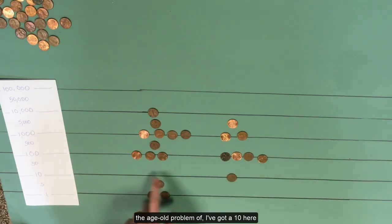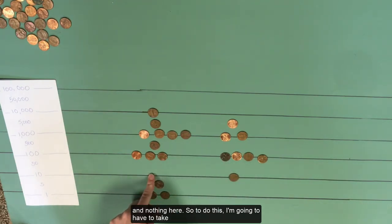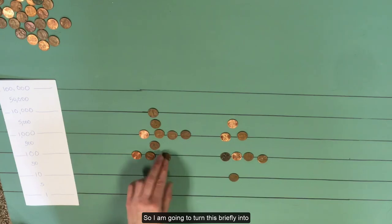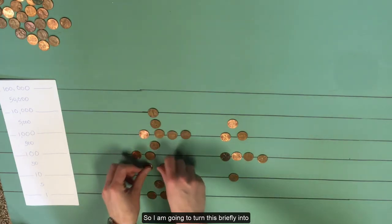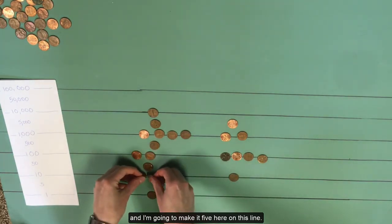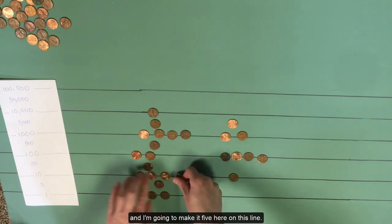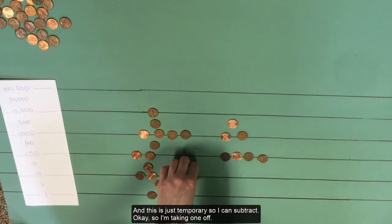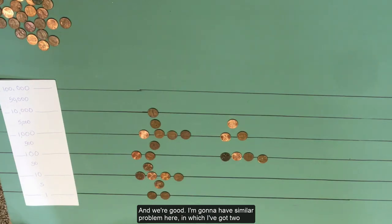Now we have the age old problem of, I've got a 10 here and nothing here. So to do this, I'm going to have to take this 100 and I'm going to have to break it down. So I am going to turn this briefly into two fifties, just so we don't lose track. And I'm going to take this and I'm going to make it five here on this line. And this is just temporary so I can subtract. So I'm taking one off and we're good.